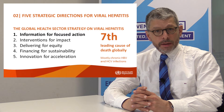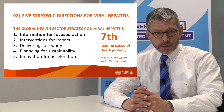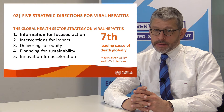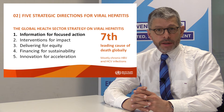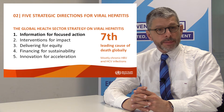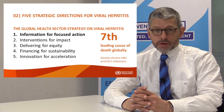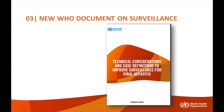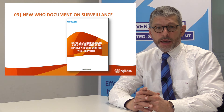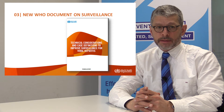WHO is responding to viral hepatitis through the global health sector strategy on viral hepatitis, which has five strategic directions. The first strategic direction, information for action, is about getting data for decision making. This new surveillance document is part of that strategic direction. It is called Technical Considerations and Case Definitions to Improve Surveillance of Viral Hepatitis.